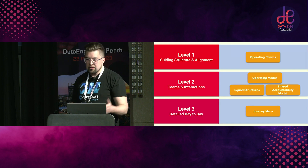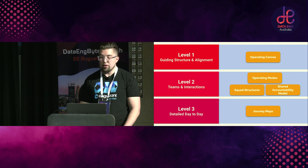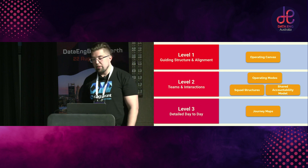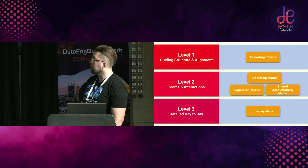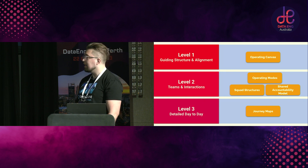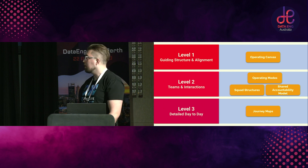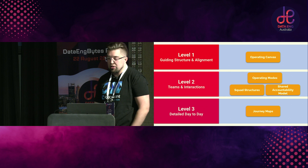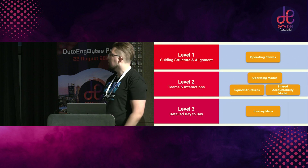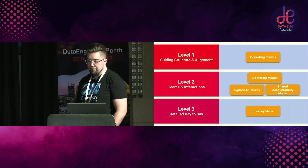Here are the bits I'm going to dive into today. I'm going to look at what an operating canvas is and the bits that go in it. I'm going to look at operating mode squad structures, multiple level two and level three components, and talk about journey maps. These are the ones I've found the best value out of and the most mileage from. Your mileage may vary — you might look at these and think they wouldn't work for you.